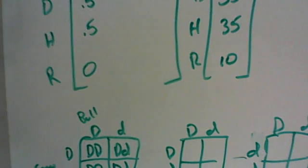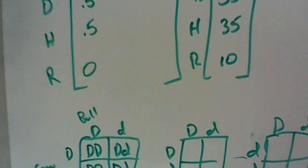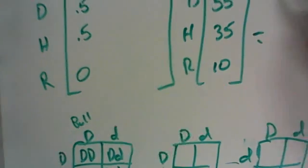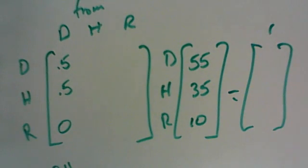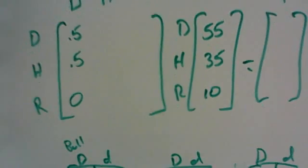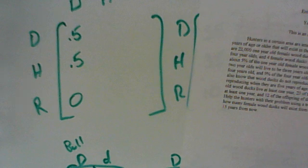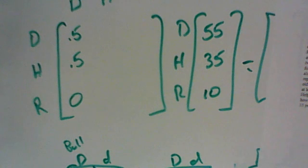That will help you set up number two. Remember, you're supposed to find the proportion of the herd that will be dominant, hybrid, and recessive in the next five generations. This first Punnett square gives you generation one, but you'll need to continue for the second, third, fourth, and fifth generations. You can use your calculators, which will help quite a bit. If you finish that, the question on the back is extra credit — note that matrix will be five by five, not three by three. You can work with a partner. Good luck!